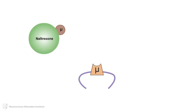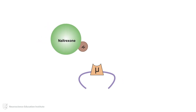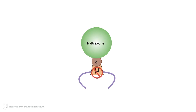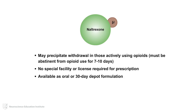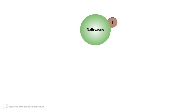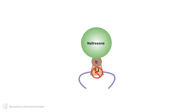Naltrexone is a mu-opioid receptor antagonist. Thus, binding of naltrexone to mu-opioid receptors results in no effect, yet blocks the actions of opioid agonists. It is important that an individual be free of opioid agonists for 7 to 10 days before initiating naltrexone, as naltrexone can precipitate withdrawal in those actively using opioids. Naltrexone does not require specialty facilities or licenses and is available as both oral and 30-day depot formulations. Compared to methadone or buprenorphine, there is relatively little risk of respiratory depression or overdose. As an antagonist of mu-opioid receptors, naltrexone blocks the actions of mu-opioid receptor agonists, such as heroin.